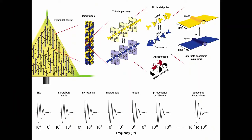So here's the general scheme: we have a multi-scale hierarchy, and consciousness — Orch OR — can occur at terahertz or slower frequencies, and can kind of move around, maybe even like music, possibly extending down to Planck-scale geometry.